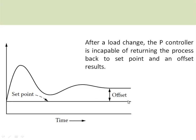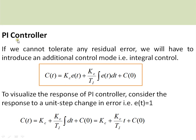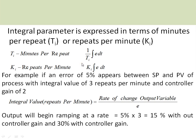The steady-state error can be eliminated by using the integral controller. The proportional plus integral (PI) controller equation is: c(t) = Kc × e(t) + (Kc / Ti) × ∫e(t)dt + c(0), where the first term is the proportional part and the second term is the integral part. The response of the PI controller to a step change in error results in a ramp change in the controller output, since the integral of a step is a ramp. The integral parameter is often expressed in terms of minutes per repeat (Ti) or repeats per minute (Ki).